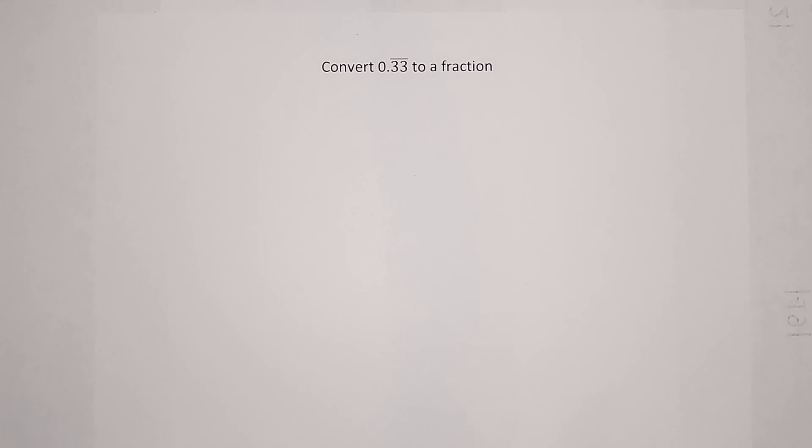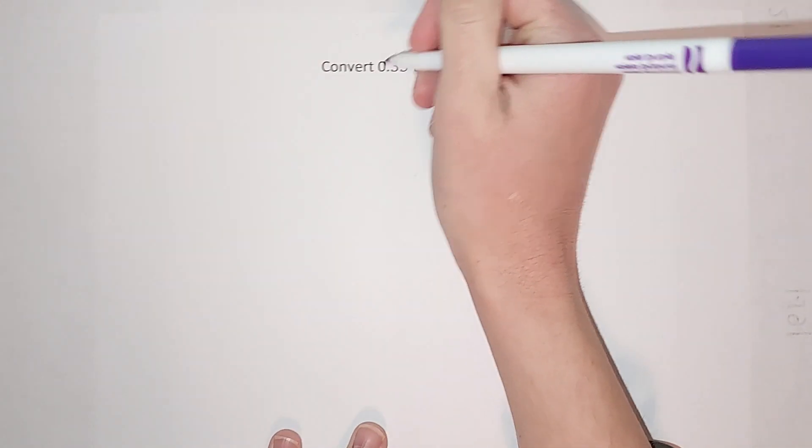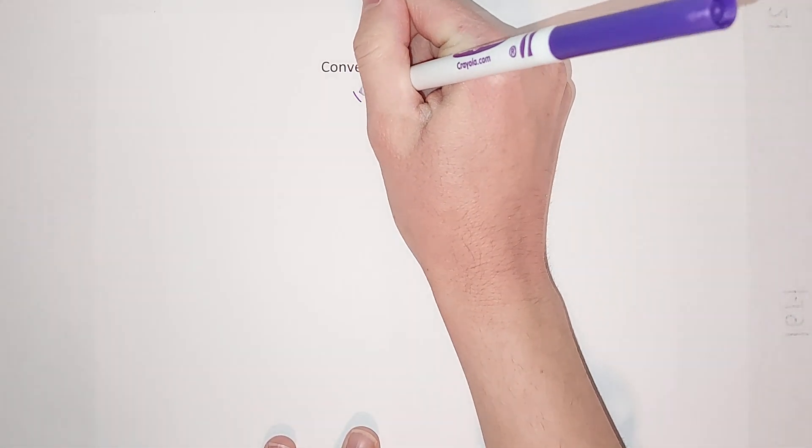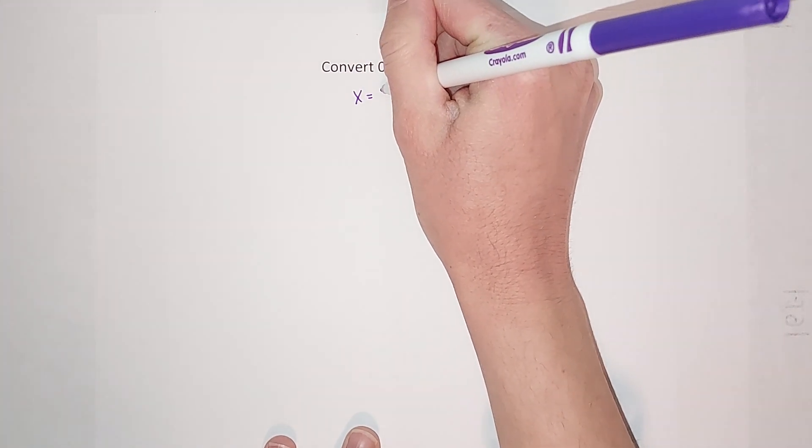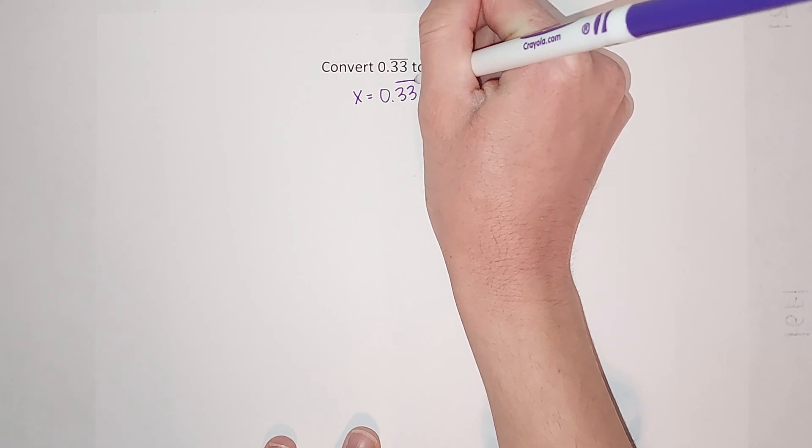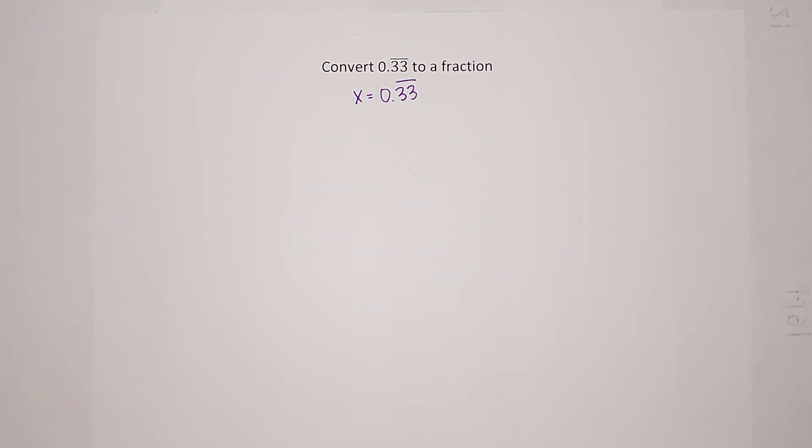Because it goes on forever, right? So we have a different way of doing it. What we're going to do first is we're going to set our number here equal to a variable. So we're going to do x equals 0.33 repeating.